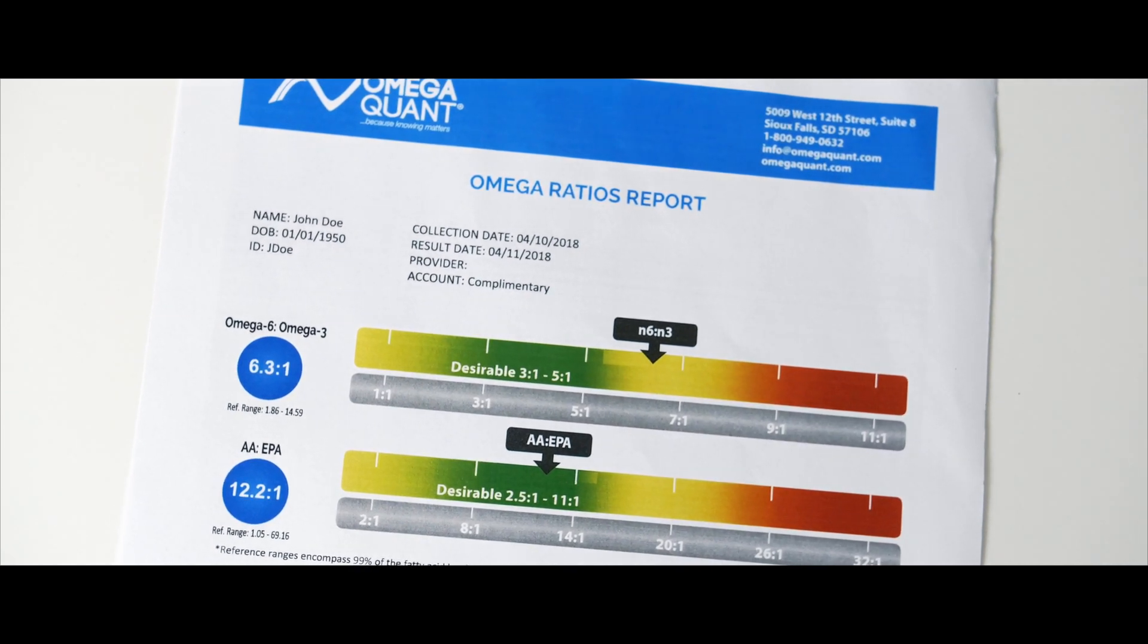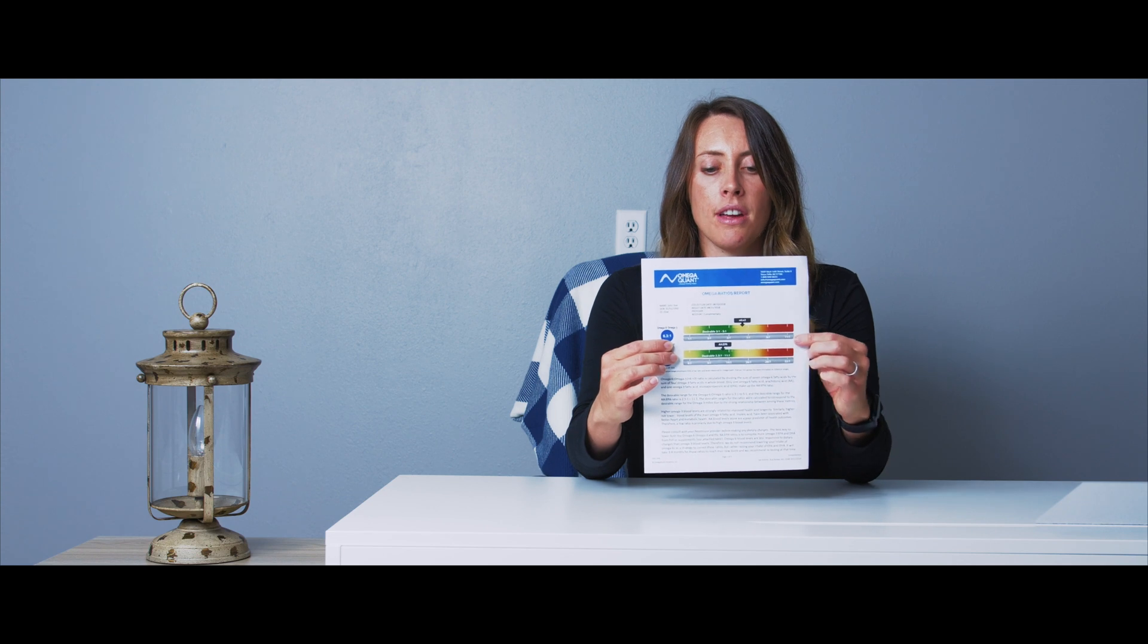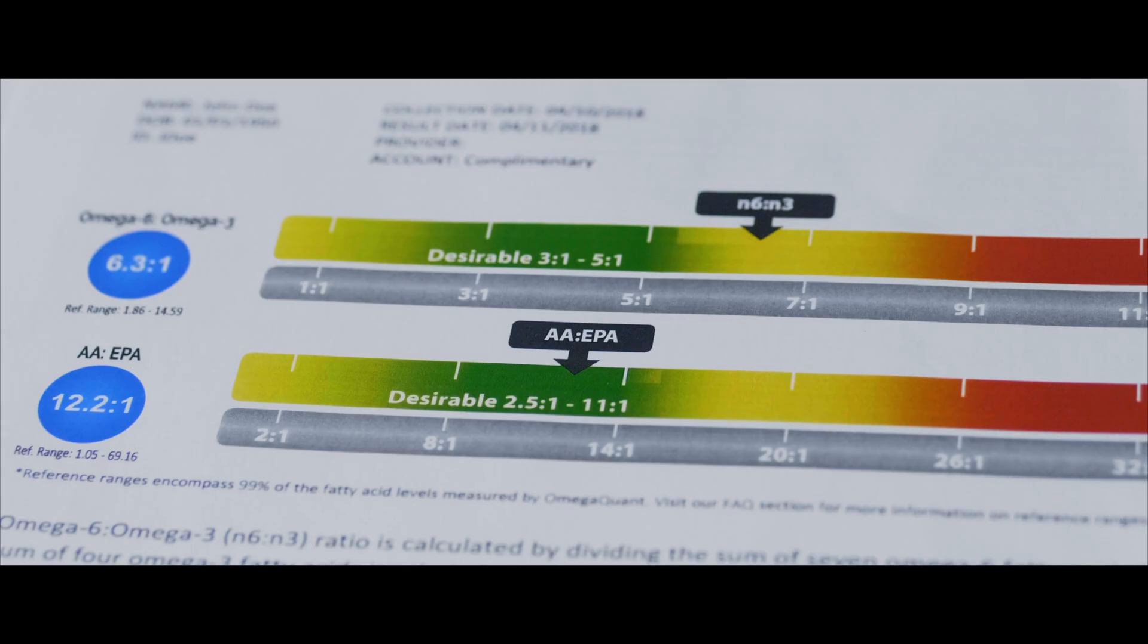Your result will be displayed both in the little blue circles and also you can see where you are on the spectrum here, and if you're in a desirable zone where it's green versus an undesirable zone where it's red.